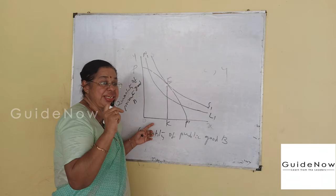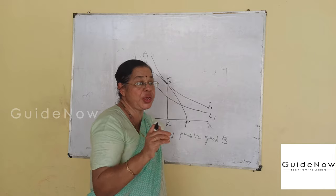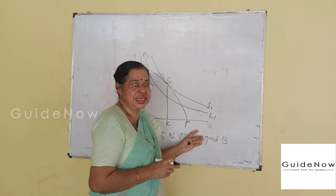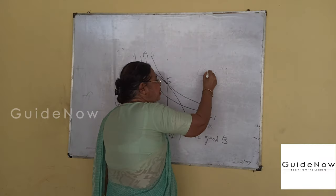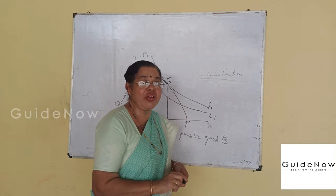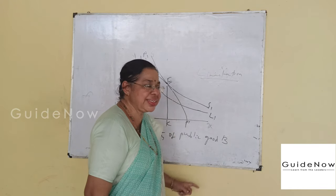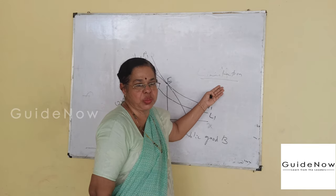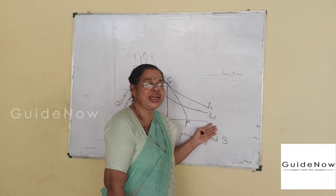He concludes that this is the efficient allocation of public goods, as defined by Samuelson's approach in the Pure Theory of Public Expenditure. Based on this figure, he finally identified two important limitations: first, revealing individual preferences is very difficult in the case of the social welfare function; and second, value judgment has no scientific support.